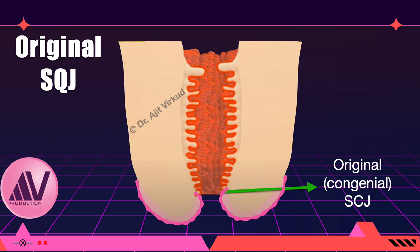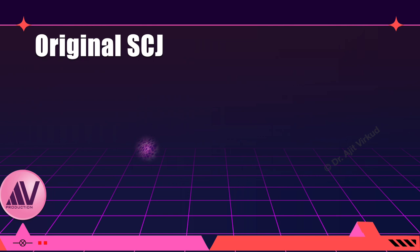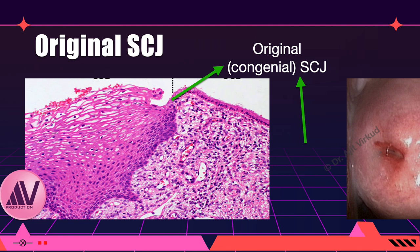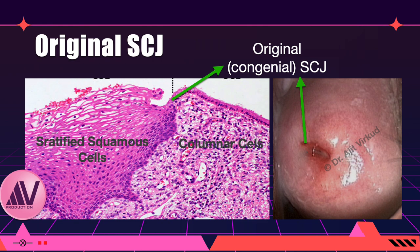At birth and during the pre-menarchal years, the squamo-columnar junction is located at or very close to the external os. During reproductive age, it is located at variable distances from the external os. In a post-menopausal woman, the new squamo-columnar junction is not visible and has receded into the endocervix. This histological slide shows the original squamo-columnar junction on H&E stain, illustrating the abrupt change from columnar to stratified squamous epithelial cells — a finding rarely seen in adult life.